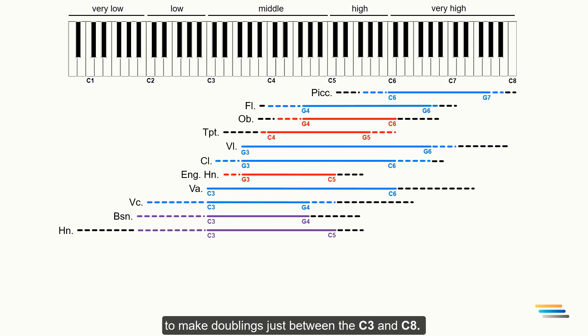I want to remind you that this chart will help you to make doublings just between C3 and C8. The lower and middle charts will be discussed in future lessons. As you can see, I have chosen the brilliant registers where the instruments are well balanced with other instruments. In addition, they have an excellent dynamic range from soft to strong.